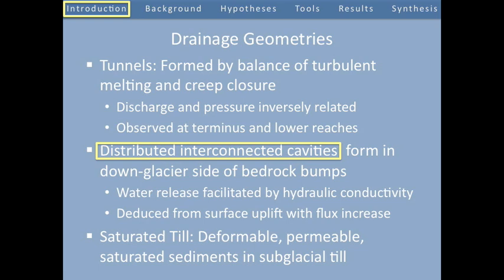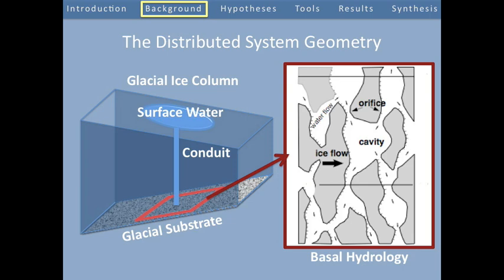So we all agree on what we mean when we say a distributed system. Let's consider an ice column that sits in the middle of a glacier or ice sheet. Water is stored on the surface of this ice column in either snow, firn, or supraglacial lakes. Crevasses or moulins exist in the interior of this glacier which can deliver water from the surface to the bed. And at the bed, we have a series of topographical highs in the form of bumps on the bedrock. On the lee or down glacier side of these bumps are cavities. Water is then pushed through these cavities down glacier by a pressure gradient.